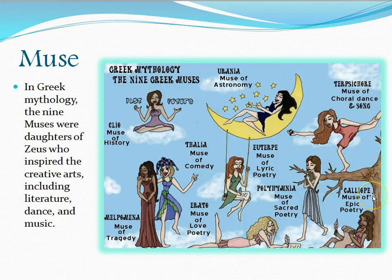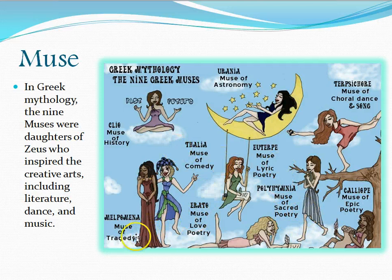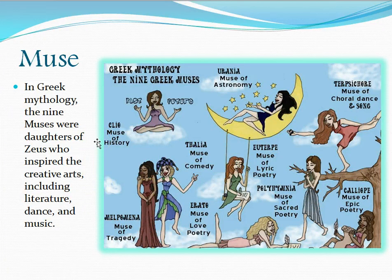Calliope, the muse of epic poetry. Polyhymnia, muse of sacred poetry. Euterpe, muse of lyric poetry, and so on and so forth. So you can see all the different things that they inspired. One that's kind of interesting — one we don't always think of as entertainment — is Clio, the muse of history.